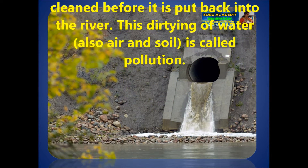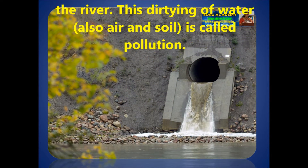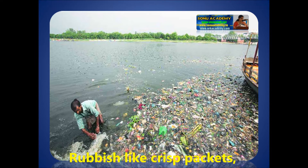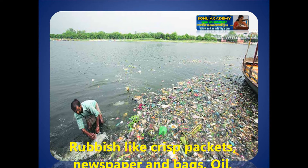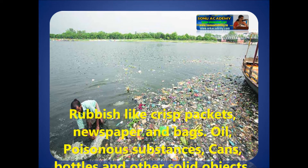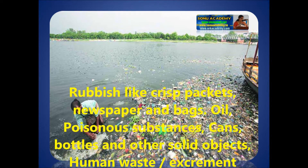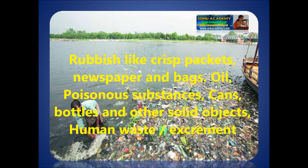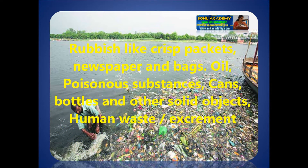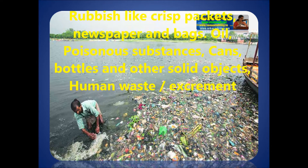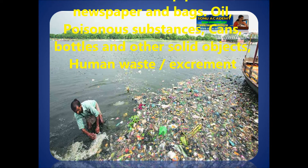But sometimes the water is not cleaned before it is put back into the river. This dirty water — the mixing of harmful substances into water and soil — is called pollution. Let us see some of the reasons for pollution. Pollution can be in a variety of forms, for example rubbish like crisp packets, newspapers and bags, oil, poisonous substances, cans, bottles and other solid objects.